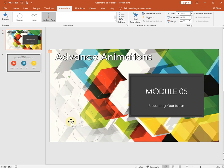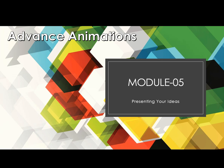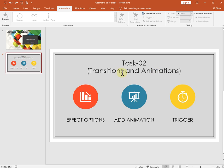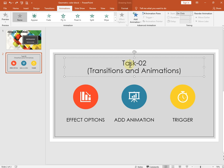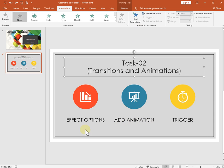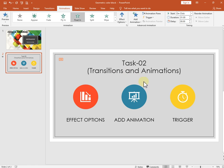Now let's move to the advanced animation options. I have added some lines, images, and text on the slide. Whenever you want to insert any animation, click on the object and go to the animation tab. You have three options: Add Animation, Effect Options, and Trigger. First insert an animation — for example, the 'Float In' option, which moves the object like that.